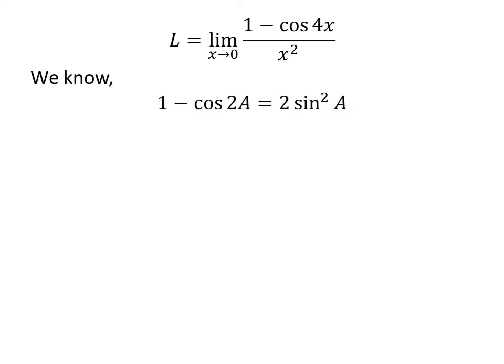We know 1 minus cosine of 2 times a is equal to 2 times square of sin of a. The verification of this trigonometry identity is explained in the video appearing in the upper right corner of this video; the link of the video is also given in the description section. Application of the above identity gives us L is equal to limit of 2 times square of sin of 2 times x upon square of x as x approaches 0.